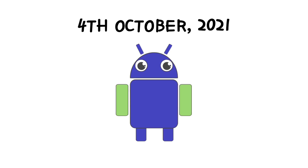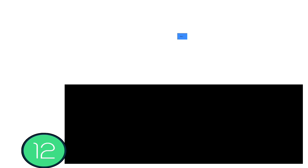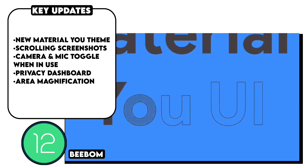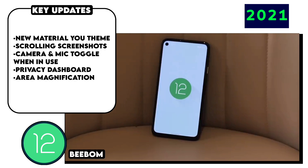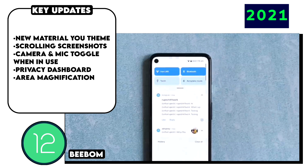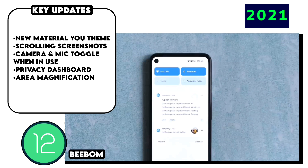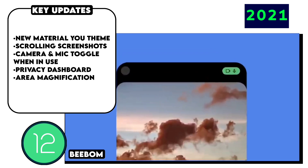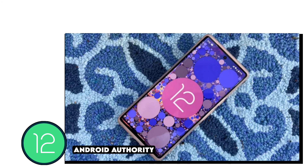Android 12 brought the biggest design update since Android 5.0 Lollipop and introduced Material You, which meant you could customize your device's look and theme based on your current wallpaper's colors, impacting the look inside supported apps and across the whole operating system, along with a mic and camera toggle whenever an app uses those, and native support for scrolling long screenshots.